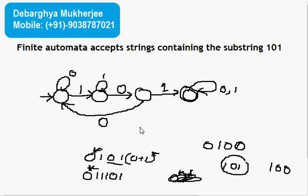So this is how we define any finite automata that has a substring containing 1, 0, 1.